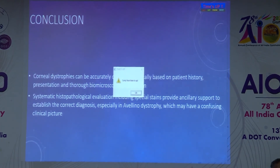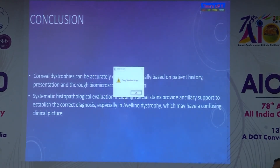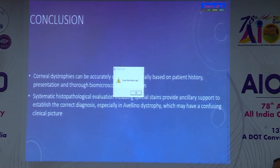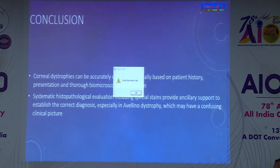Question: For macular dystrophy, what was the treatment of choice? Depending on how many layers were involved, both penetrating keratoplasty and lamellar keratoplasty were performed. There was no fixed treatment of choice — it was decided based on individual patient presentation and the extent of corneal layer involvement.